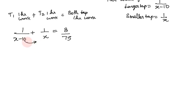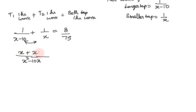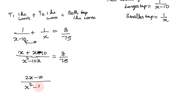Now we multiply. Take x times x minus 10, giving x squared minus 10x. Cross multiply: 1 over x minus 10 plus 1 over x equals 8 by 75. Combining the fractions: 2x minus 10 divided by x squared minus 10x equals 8 by 75.